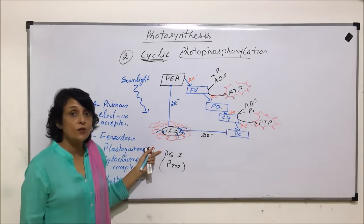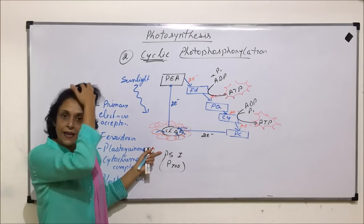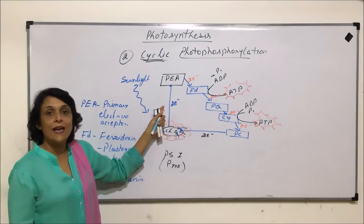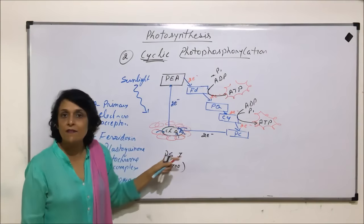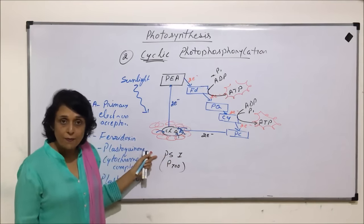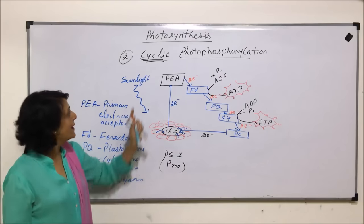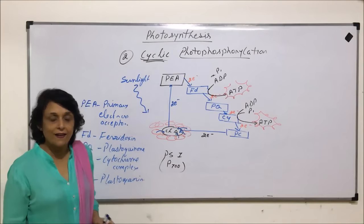This was not the case in case of non-cyclic. In non-cyclic, when chlorophyll A of PS2 releases that pair of electrons, that electron never comes back to the same chlorophyll A. And that is why the first pathway was called non-cyclic, and this is known as cyclic pathway.